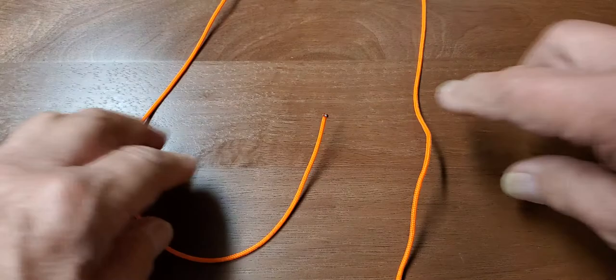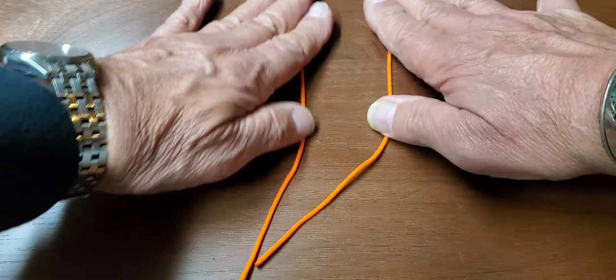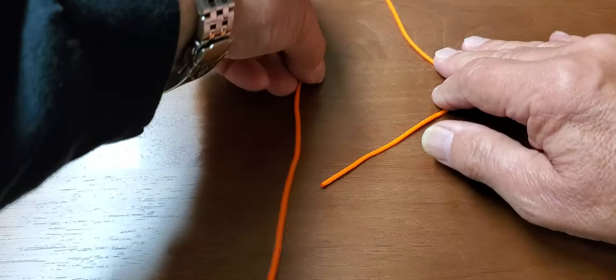So we're going to start from scratch here. Here's a piece of paracord. Now the first thing we're going to do is make a loop. This loop is going to be our finished product up here. That'll be our loop. Now we've got a short end on the right and our long end is on the left.